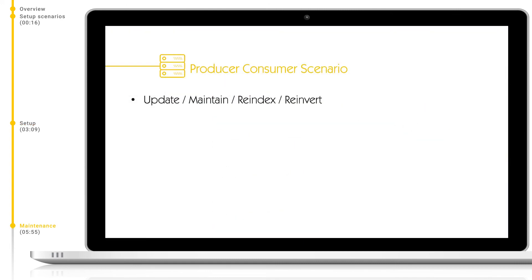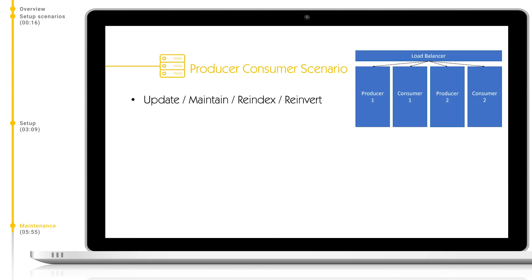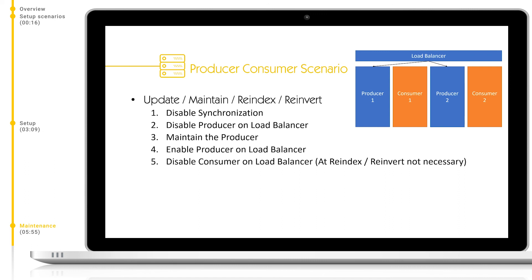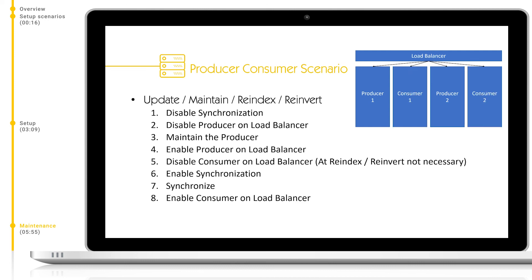To maintain the appliances, for example installing updates, index reinversion, re-indexing, etc., in a producer-consumer setup without affecting the end-user search, the best practice is the following. Firstly, disable synchronization between the appliances and disable the producers on the load balancer. Once they are offline, begin your maintenance on the producer appliances. After maintenance is complete, enable these appliances on the load balancer and disable the consumer nodes. Next, you should re-enable synchronization and synchronize the producers to the consumers. Finally, re-enable the consumer nodes on the load balancer.